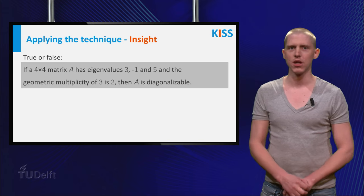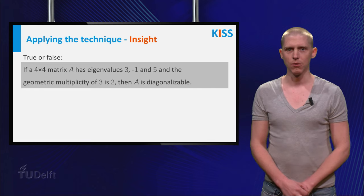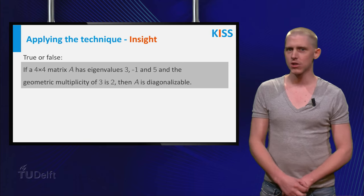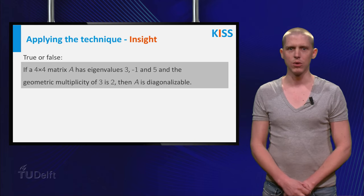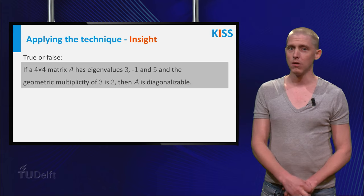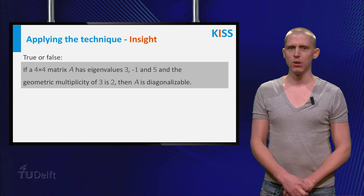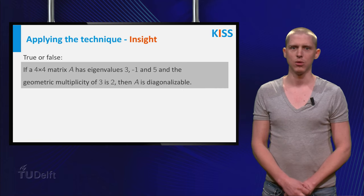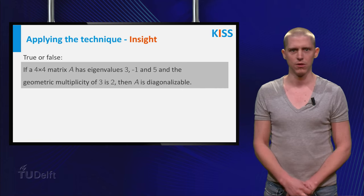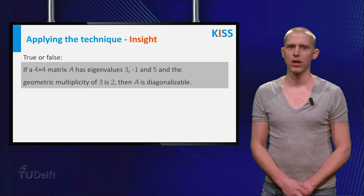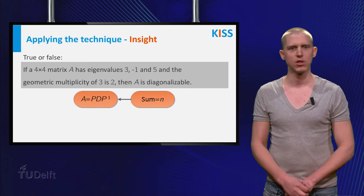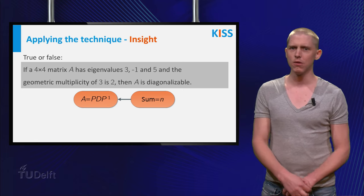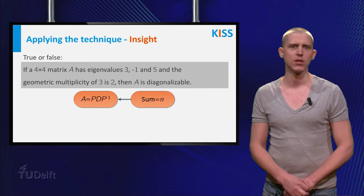You are now ready to show you have insight into the problem, by developing a plan to solve the question. The question asks whether the statement is true or false. If the statement is true, then with the given information about the matrix A, you should be able to conclude with complete certainty that A is diagonalizable. If, however, the statement is false, you should be able to think of a matrix A which is not diagonalizable, but has the properties given to you in the statement. If you go back to the knowledge you collected in the first step, you see that A being diagonalizable is the same as having the sum of the geometric multiplicities equal to 4. So if you can show this, you can conclude that A is diagonalizable.